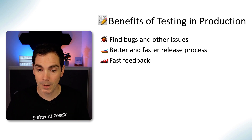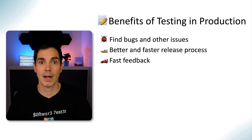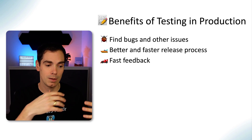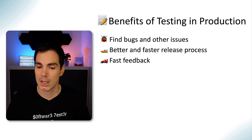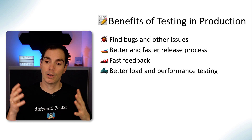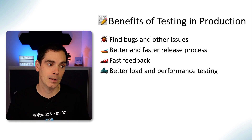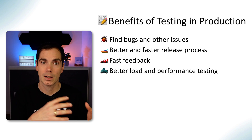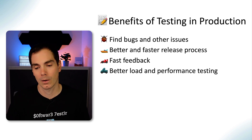Fast feedback is a major benefit — especially looking at A/B testing, feature flags, or beta programs with real customers. You can ship something, do minor pre-production testing, and then see how features are used by customers. Testing in production is also much better — or really the only way — for load and performance testing, since you can't replicate real hardware and cloud infrastructure on a sandbox or Docker container. You need the real servers that production actually runs on.